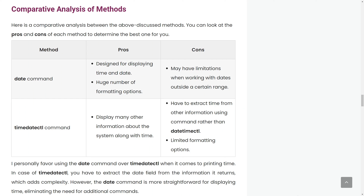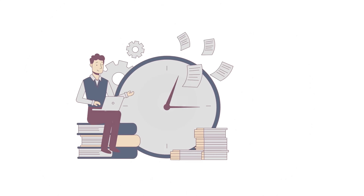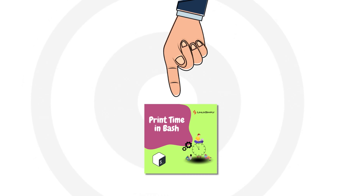Now for a comparative analysis between the two methods: in my opinion, using the date command to print time in the terminal is the best option, because it provides many more formatting options and is easier to use. With the timedatectl command you also need to extract the time field from the displayed output using awk. That was all for today — if you want to know further, please refer to the article in the video description below. Thank you for watching.